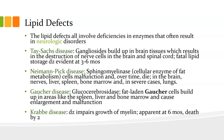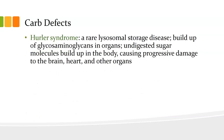Krabbe disease impairs growth of myelin, is apparent at six months, and death is usually by year two. Then there's one that affects carbohydrates called Hurler syndrome. It is a lysosomal storage disease — you get a buildup of glycosaminoglycans in organs, which are undigested sugar molecules that build up in the body and cause progressive damage to the brain, heart, and other organs.